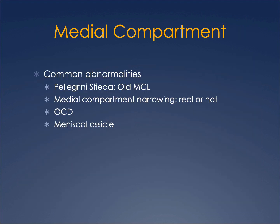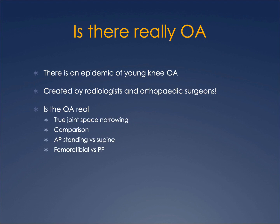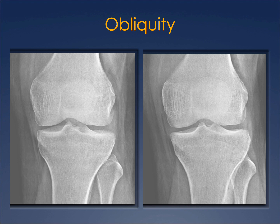Moving to the medial compartment: I see many people over-calling osteoarthritis, essentially creating an epidemic. The first question is whether joint space narrowing is real or not. One way you can be misled is by obliquity. On the left radiograph, there is apparent joint space narrowing, but if you look at the articular surface of the medial tibial plateau, it appears to be overlapping — that is because of obliquity. The right image shows a more accurate interpretation with a flatter articular surface appearance.